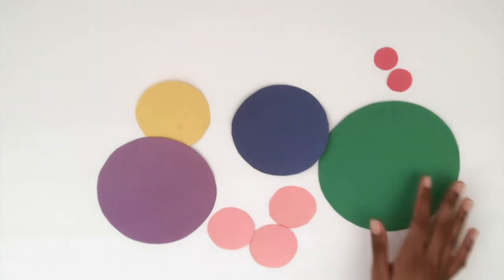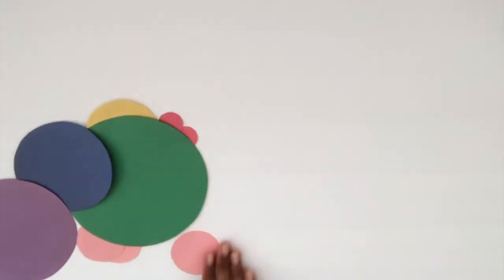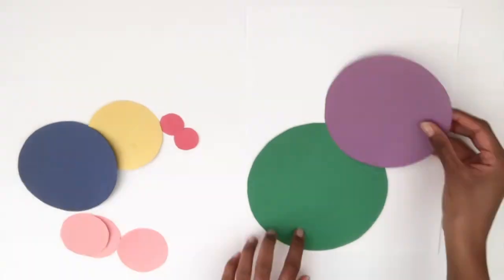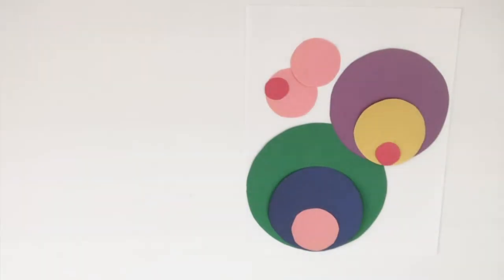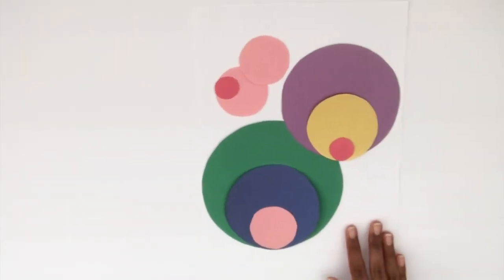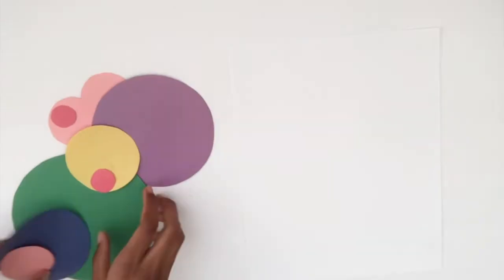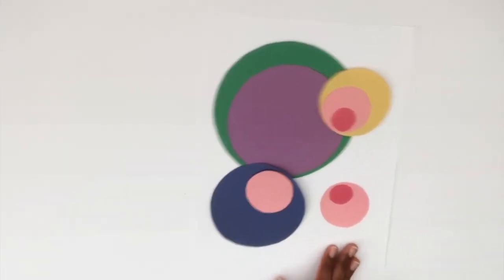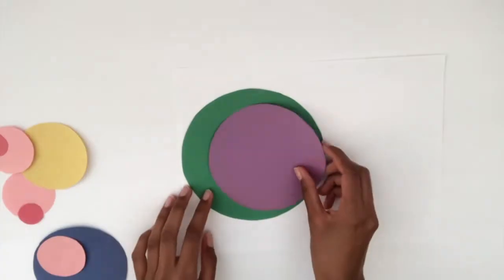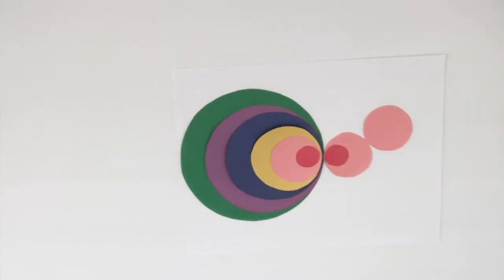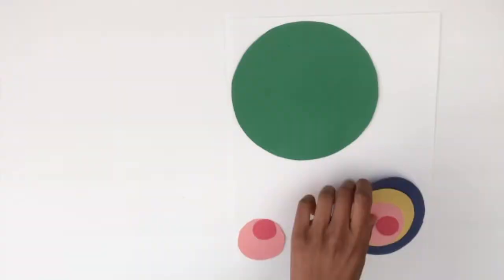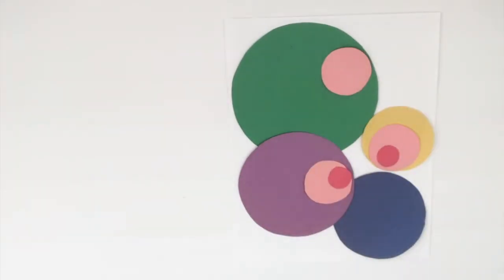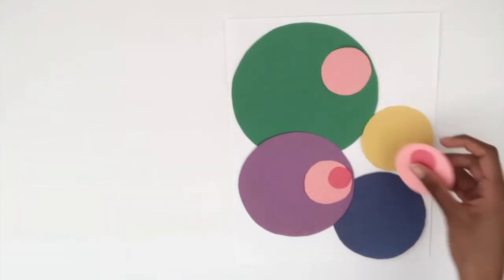Now, all you have to do is put them on your white piece of paper and arrange them how you like. There are so many possible arrangements you can do. You can overlap them, put them next to each other, or basically do whatever you want. Just have fun with it. And if you can't decide, you can do what I did and just experiment until you find the one that you like the best.